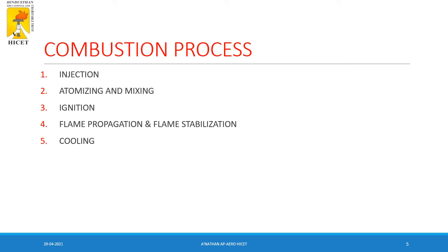In the combustion process there are five steps. The first is injection of fuel, then atomizing and mixing, then igniting the air-fuel mixture. Once the fuel is ignited, the flame has to propagate and must be stabilized inside the combustion chamber.